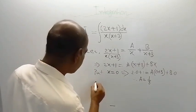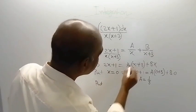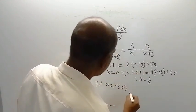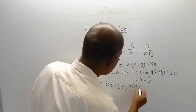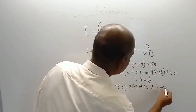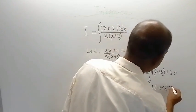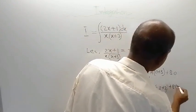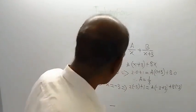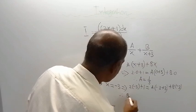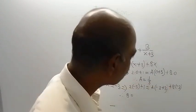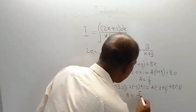Similarly, if you put x is equal to minus 3 on both sides of this equation, then what you are getting? 2 into minus 3 plus 1 is equal to A into minus 3 plus 3, and B into minus 3. This part is 0. So what is the result? B is equal to 5 by 3.